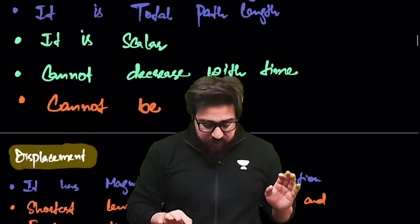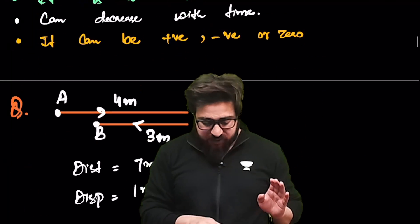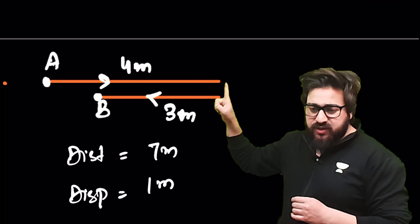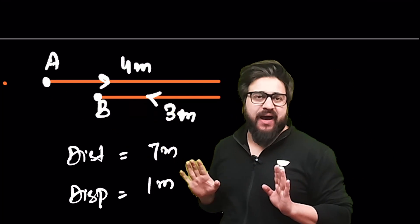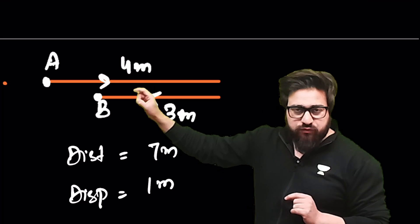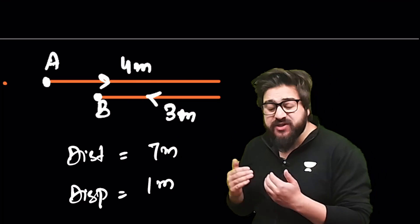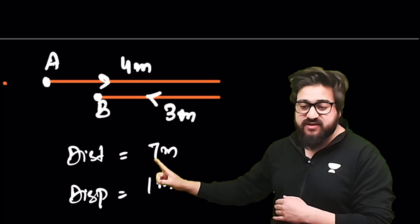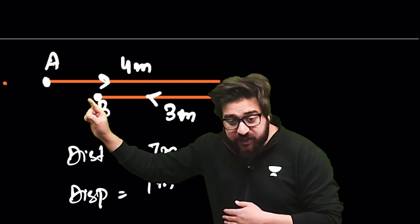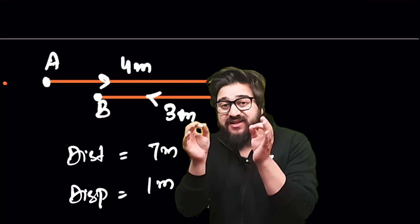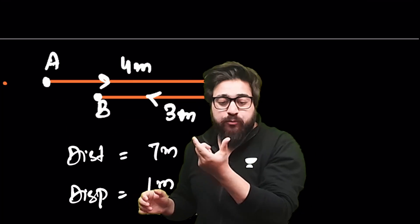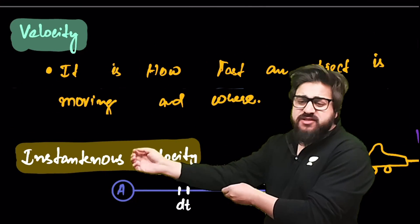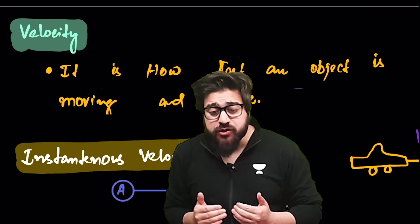Displacement has a proper direction from A to B, but distance does not have direction — it has magnitude only. For example, if you move from A to C (4 meters) and then C to B (3 meters), the distance covered is 4 + 3 = 7 meters. The displacement — the direct distance between A and B — is only 1 meter.